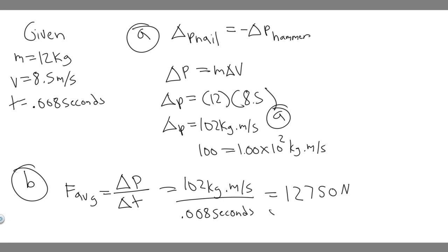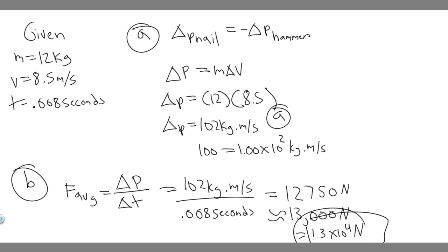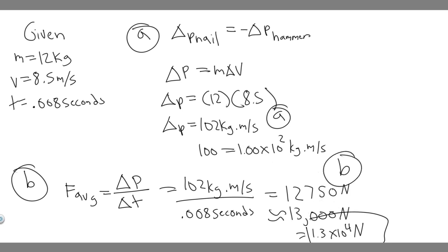I'm going to round this to 13,000 and write it in scientific notation: 1.3 times 10 to the 4 newtons. Just make sure you do what your teacher wants. If they want the exact version, use 12,750 newtons. If they want it rounded in scientific notation, it's 1.3 times 10 to the 4 newtons. This is your answer to Part B, and 102 kilogram meters per second is your answer to Part A. Hopefully you found this useful.